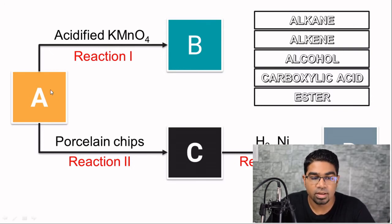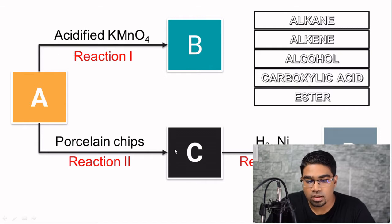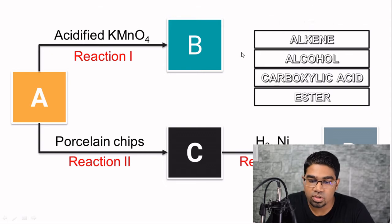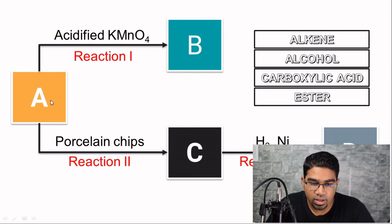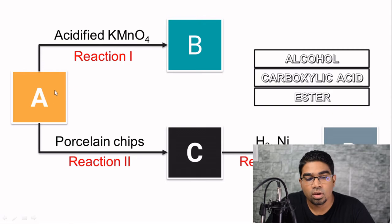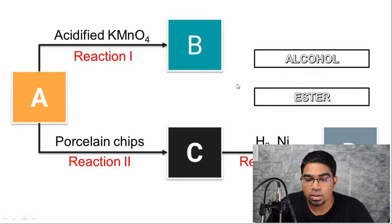Let's see what works with A, since A is the starting point. A reacted with acidified potassium manganate 7 solution as well as with porcelain chips. Alkanes are fairly unreactive — they do not undergo reaction with acidified potassium manganate solution, nor with porcelain chips, so alkane is eliminated. Alkenes can react with acidified potassium permanganate solution to form diols, but they do not react with porcelain chips, so alkene is out. Carboxylic acid and esters also don't undergo these two reactions, so they are eliminated as well.